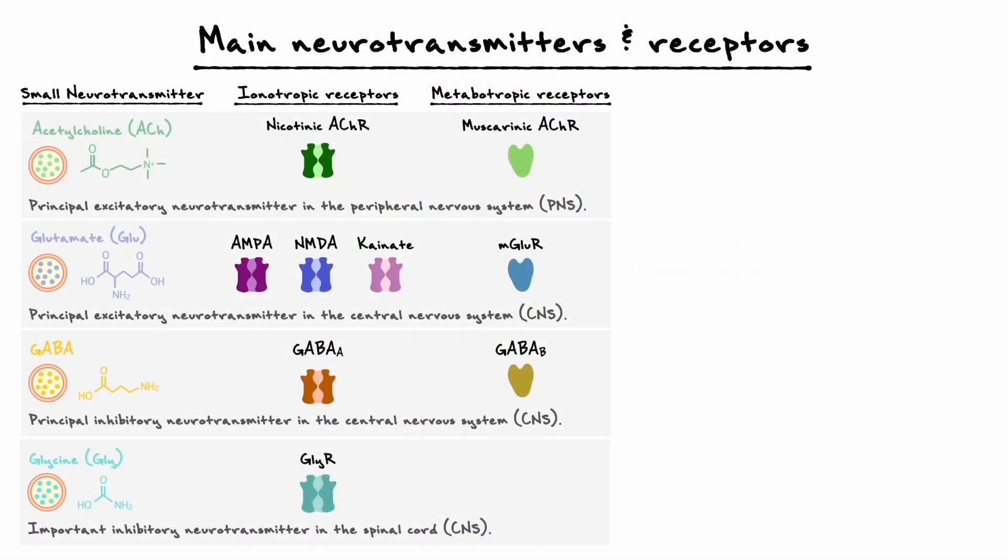Now that we have covered acetylcholine, glutamate, GABA and glycine, I want to move on to another category of neurotransmitters called biogenic amines. There are five well-established biogenic amines: dopamine, norepinephrine, epinephrine, serotonin, and histamine.